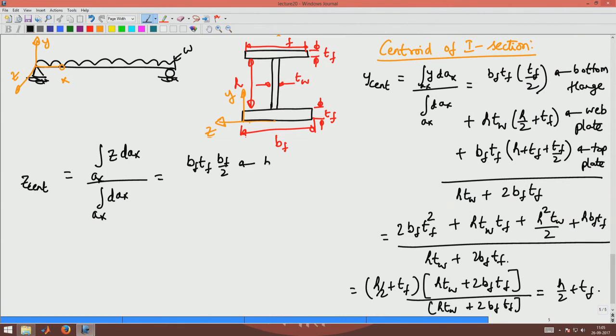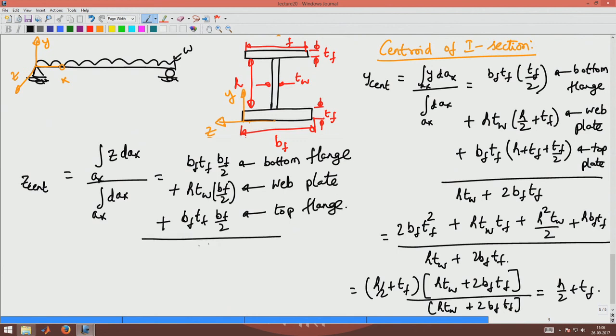For the web, H times Tw times Bf by 2. Plus for the top flange, Bf times Tf times Bf by 2, divided by 2 times Bf Tf plus H Tw. It is easy to see that this will be nothing but Bf by 2 which will be your Z centroid.